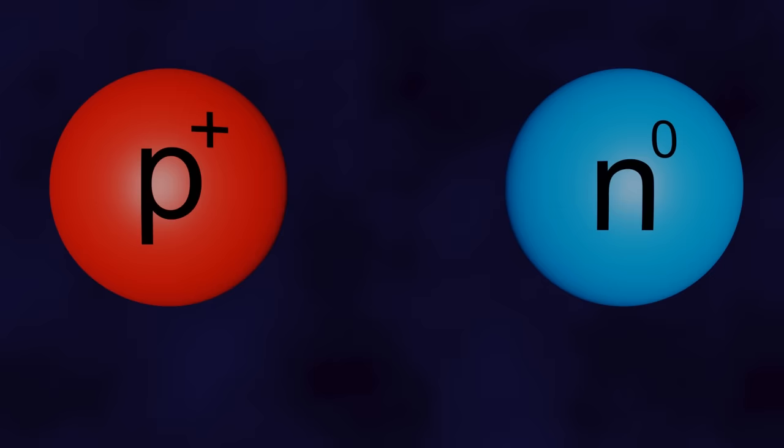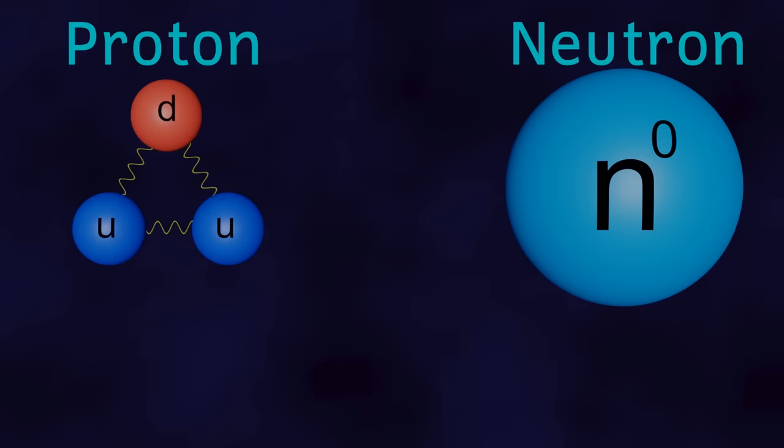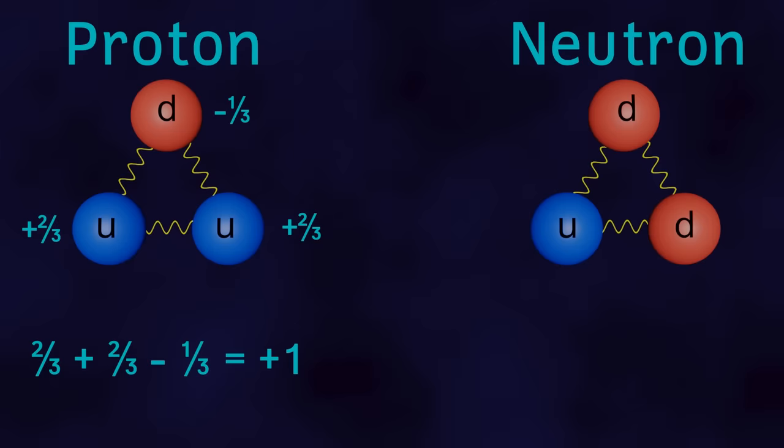The next particles on our little journey are ones we've already mentioned before, and these are the protons and the neutrons. Each proton is made from two up quarks and one down quark, as well as particles called gluons holding the quarks together. If we look at the charges of these quarks, we can work out that the charge on a proton is plus one. A neutron is made from two down quarks and one up quark, again held together by gluons. The charges on the quarks that make up a neutron give it a neutral charge.